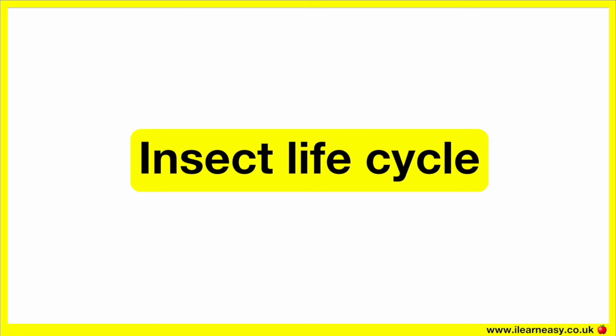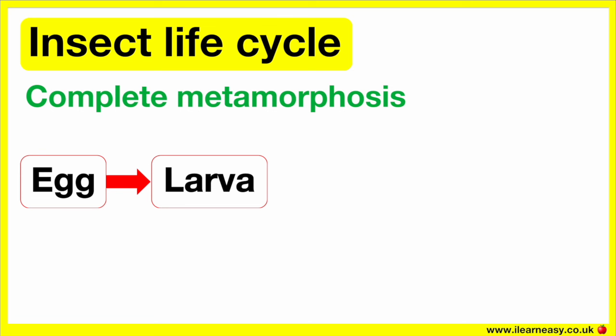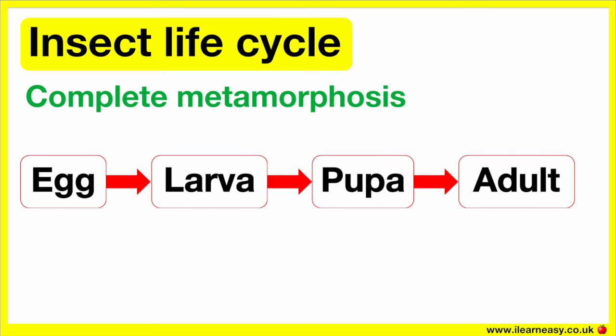Insects can go through two types of life cycles: complete metamorphosis or incomplete metamorphosis. Complete metamorphosis consists of four stages: egg, larva, pupa, and adult.